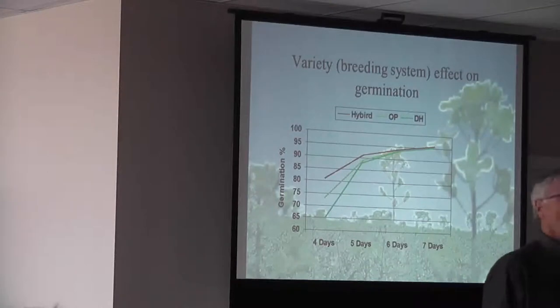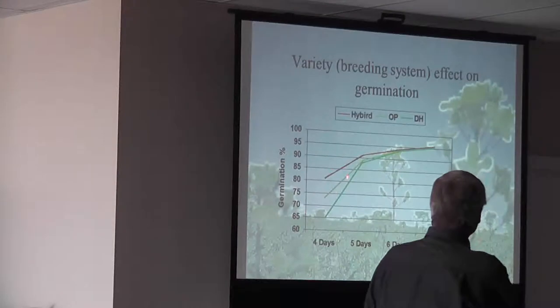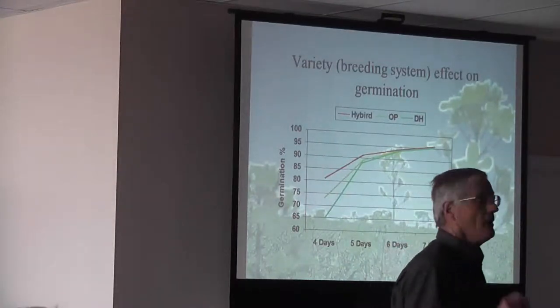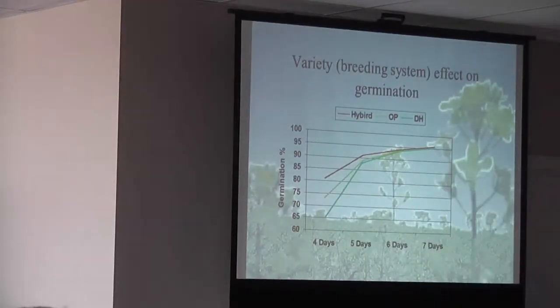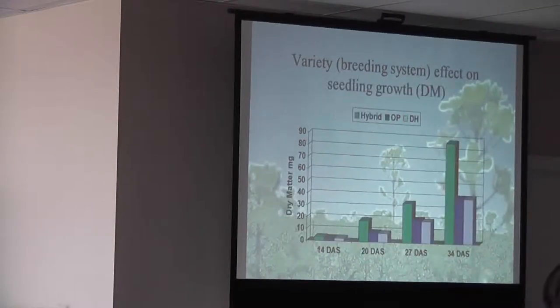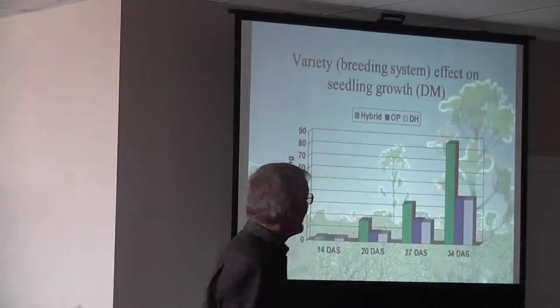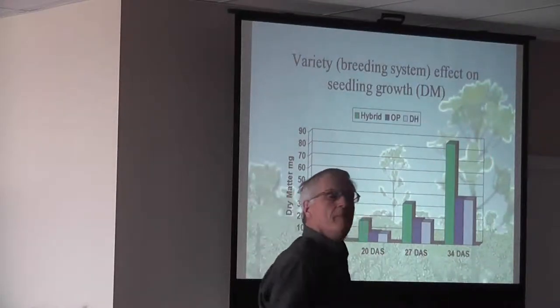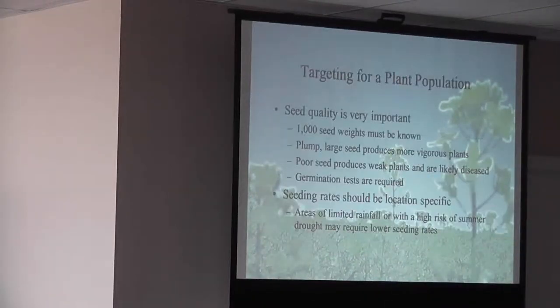The variety you grow makes a difference. We know that the hybrids have a greater germination capability early. They tend to be larger on seed size. And they get out of the ground a little bit quicker. A higher percent of the seed makes plants. This is just showing the difference between dry matter content, which think of it as leaf area index. And you can see that green line has a much higher ability to produce larger leaves earlier. And that results in higher yields.